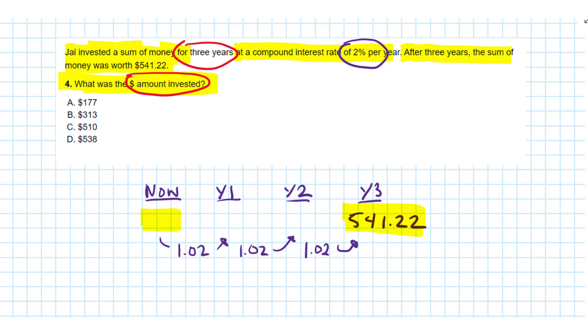So a quick way to arrive at the correct answer is just to divide by 1.02 three times. If I enter $541.22 in my calculator and divide by 1.02, then divide the result again by that number, and divide that second result again, I get $510. So that is the correct answer.